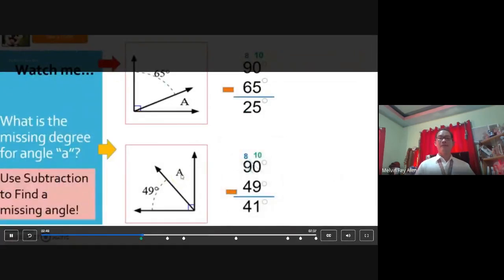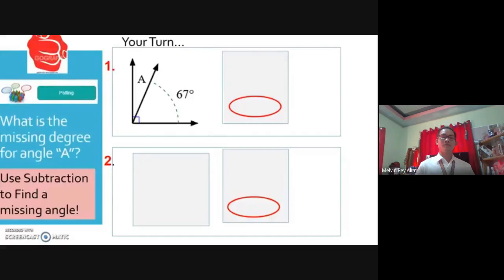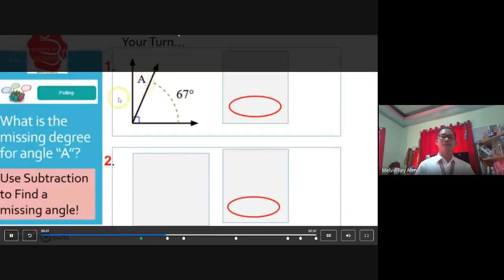Letter A. Again, it's a 90 degree angle. We can subtract 49 degrees from 90. 90 minus 49 makes 41 degrees. Let's take a look here. Actually, it's your turn to try this. I want you to use your polling. Here we go. Again, you're finding the missing angle A. All right, looking at number 1, you have 67 degrees given to you. What is the missing piece right here, letter A. Go ahead and calculate that, please.